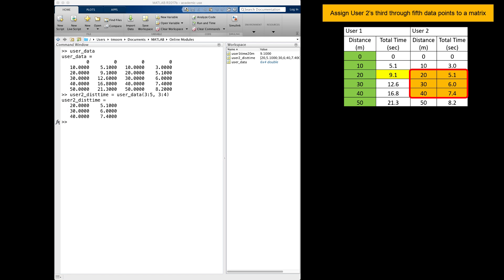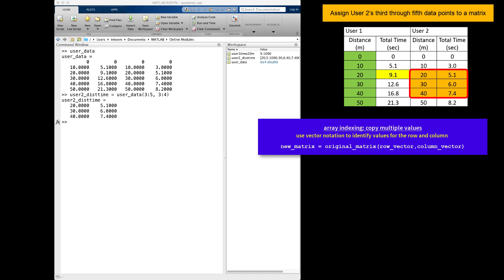As an aside, when using array indexing, you can reference the rows and columns using any vector notation. Therefore, you can choose exactly which rows and columns you want to use.